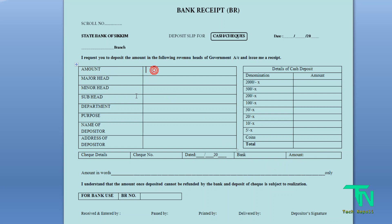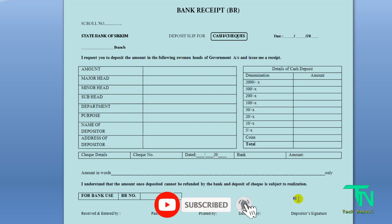If the amount is 50 rupees, write 'fifty rupees' in words in the words field. If the amount is 100 rupees, write it in words as well. After completing all fields, sign the form yourself.